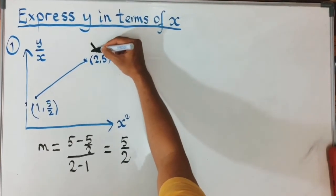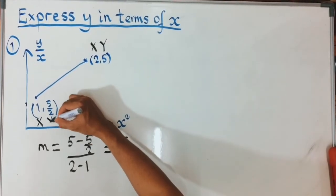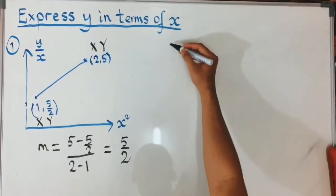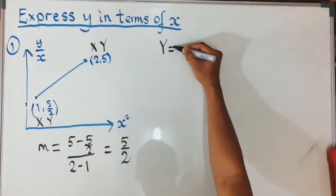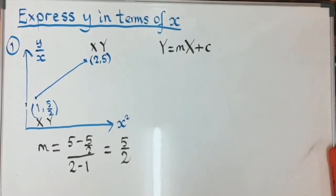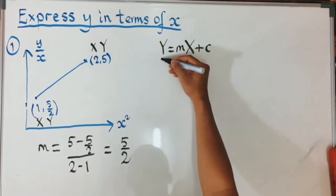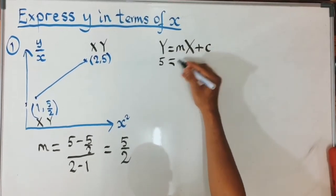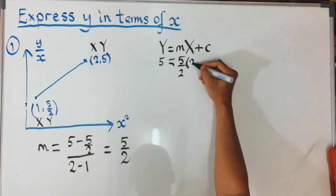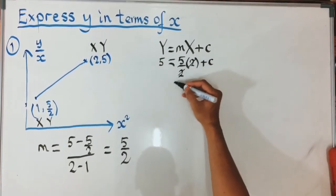Now we find the y-intercept c. This is your capital X and this is your capital Y — we use capital letters for the transformed axes. We substitute into the formula capital Y equals m times capital X plus c. You can choose any point; let's choose the point (2, 5). Substituting in: 5 equals (5/2) times 2 plus c.